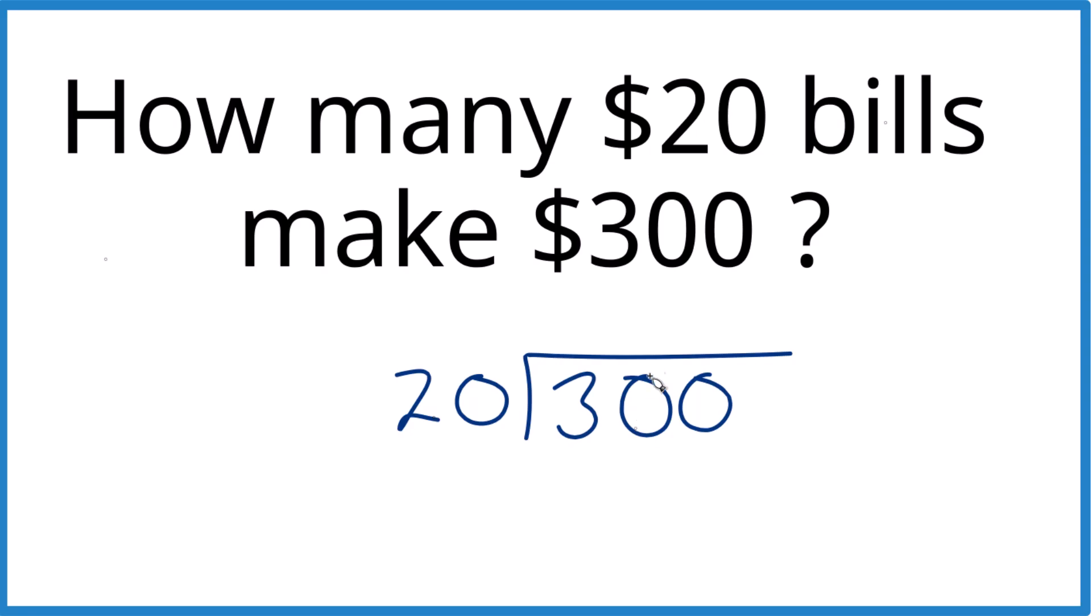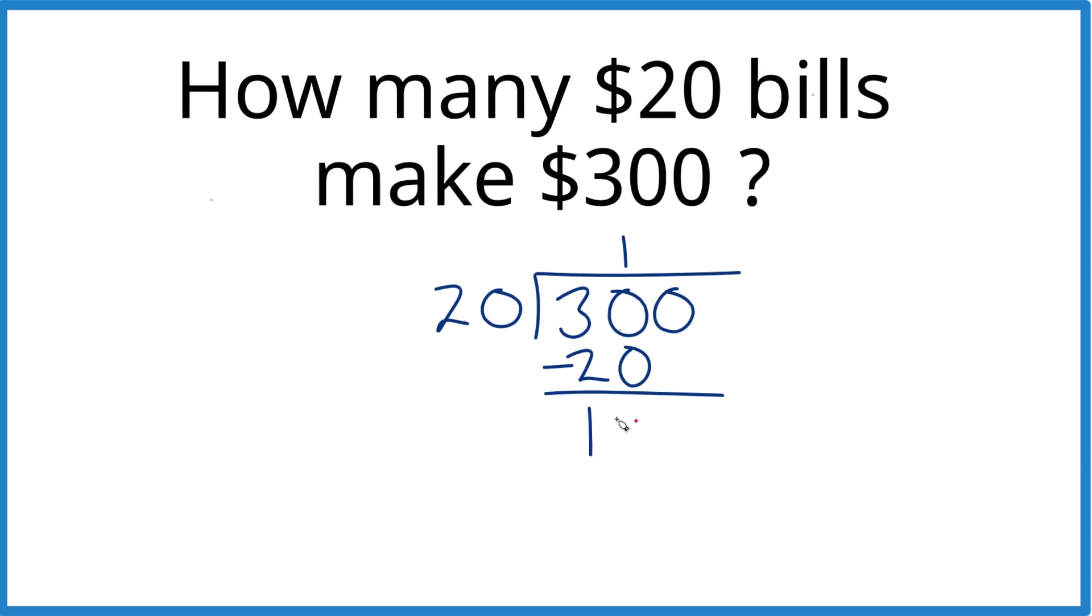So 20 goes into 30, 1 time. That's 20. Subtract and we have 10. 20 doesn't go into 10. Bring that zero down and now 5 times 20, that gives us 100. We subtract. No remainder.